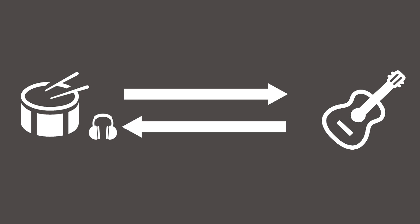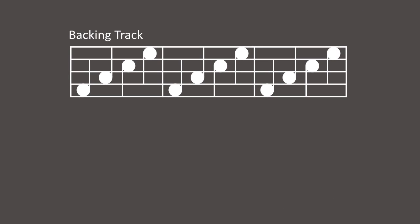One thing we've noticed, and Jamkazam musicians have noticed, is that playing a backing track — like a drum loop or an instrumental backing track — helps make sessions with higher latency work better. This is because the backing track can keep the tempo stable without being distracted by the latency of musicians playing a little behind the beat.